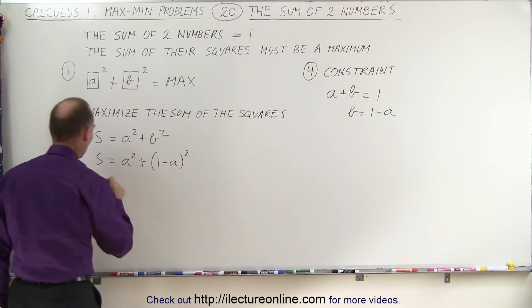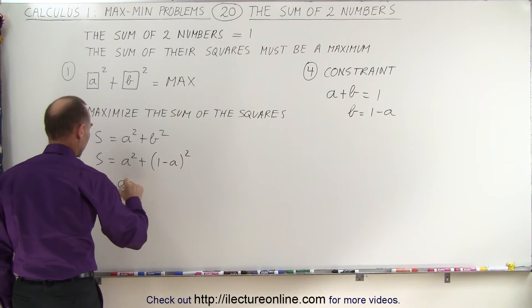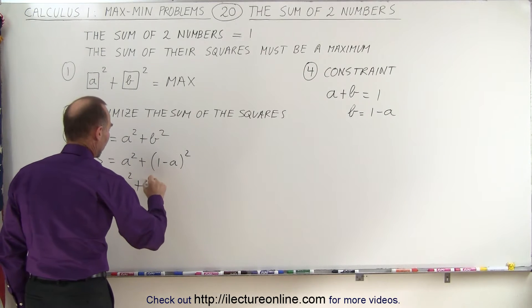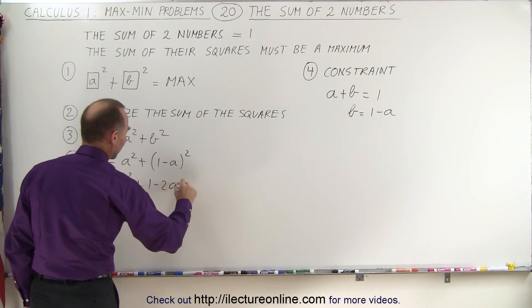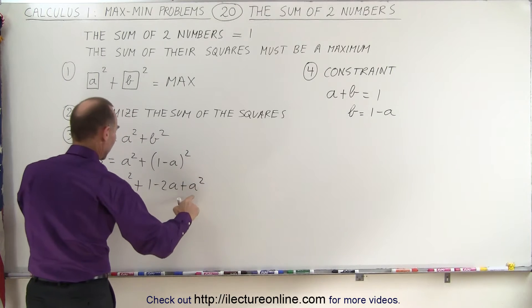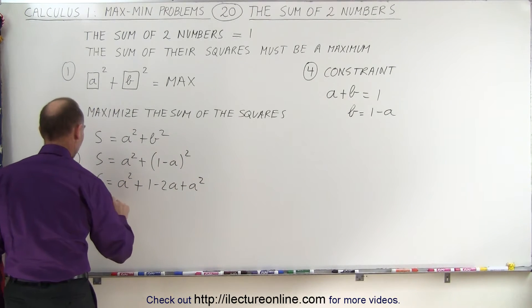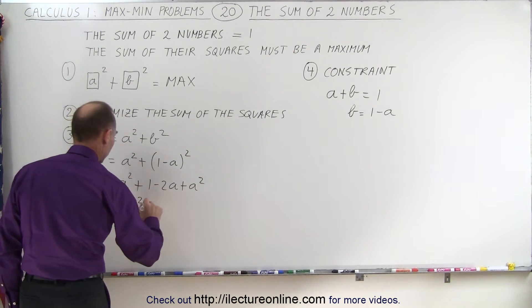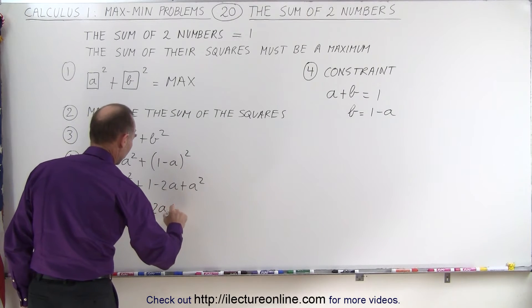Let's simplify this equation. So we have 1 minus 2A plus A squared, and combining these, we get the sum equals 2A squared minus 2A plus 1.